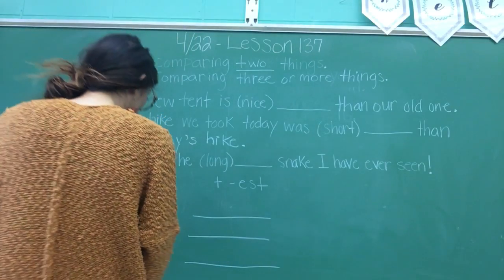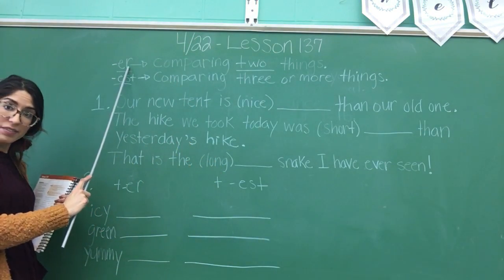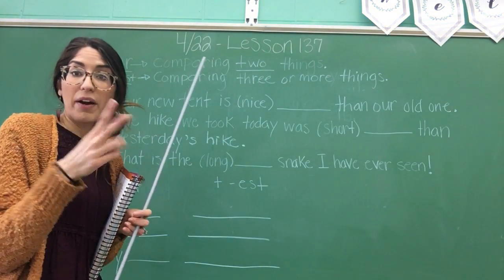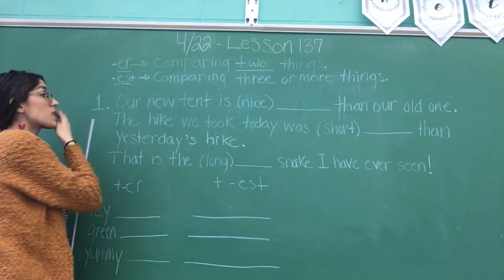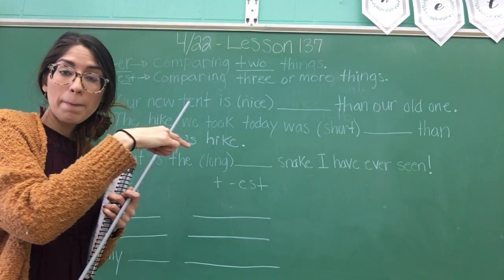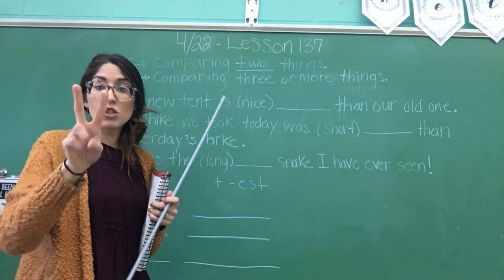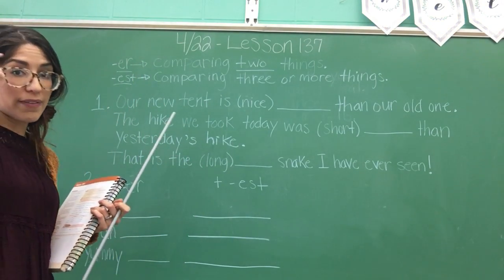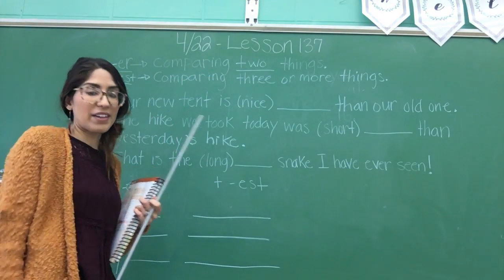I have it on the board here. When we have the ER suffix, you use that when comparing only two different things. When we have EST, that's when we compare three or more things. So three or more is EST, and ER is when you're comparing only two things. Remember that: ER with comparing two things, EST comparing three or more.